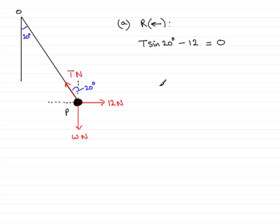Now all I need to do is rearrange this equation for T. If I add 12 to both sides and divide by sin 20, I get T equals 12 divided by sin 20 degrees. Working that out on a calculator gives T to be 35.0856 and so on, and rounding to three significant figures means the tension T is 35.1 newtons.